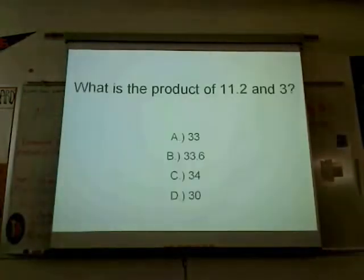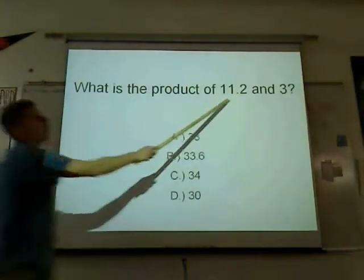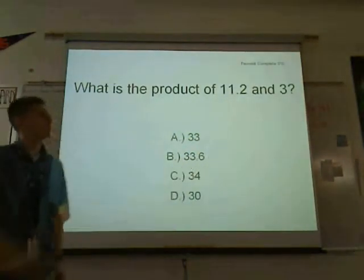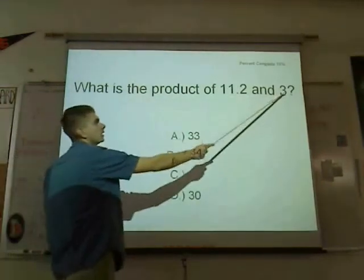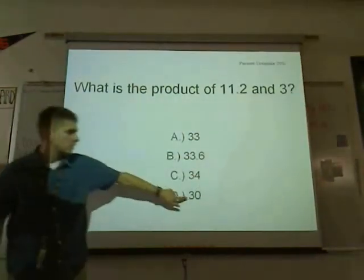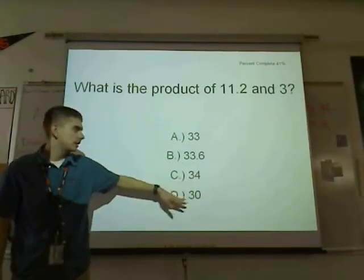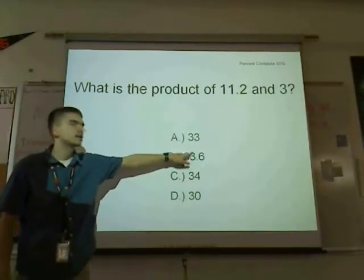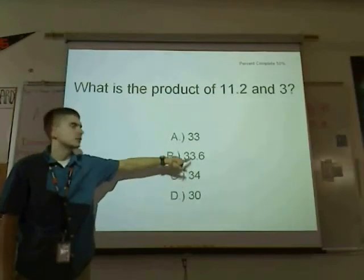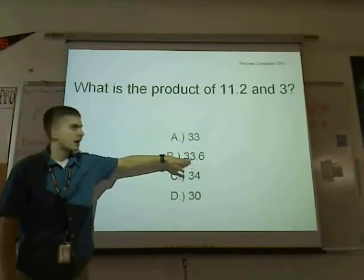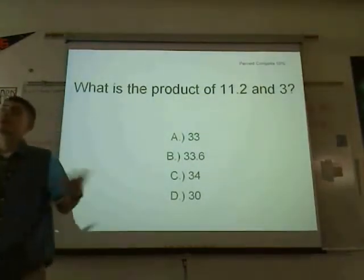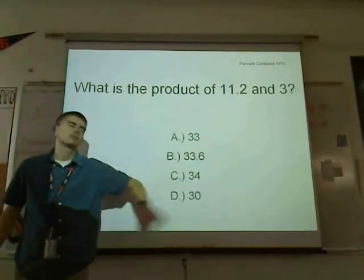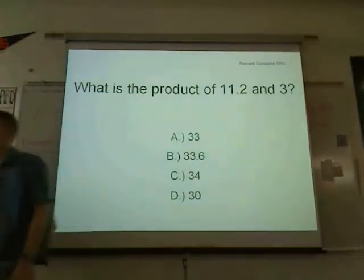Let's try one. 11.2 times 3 is 33.6, but you only get 1 digit, so you round to your first digit. You round to 3 — keep it at 30 because 33 is not 5 or greater, so since it's 33, not 35, you keep it at 30. So the answer is D. I would prefer 3 times 10 to the 1, but for right now, 30 works.